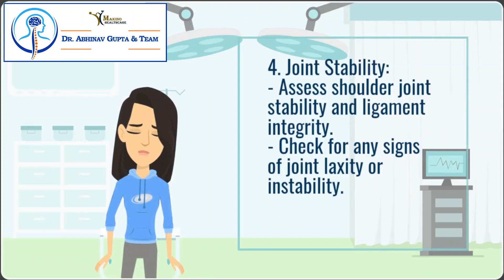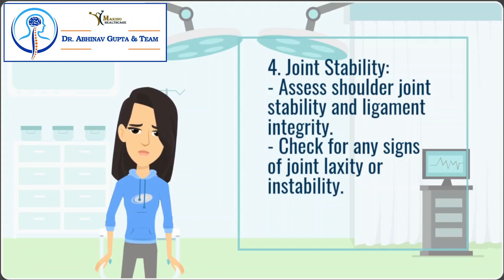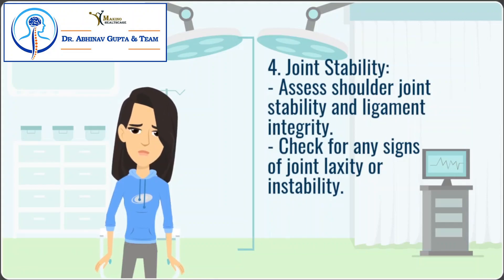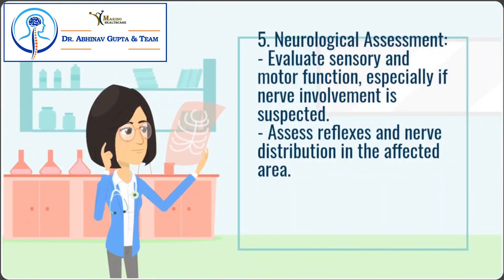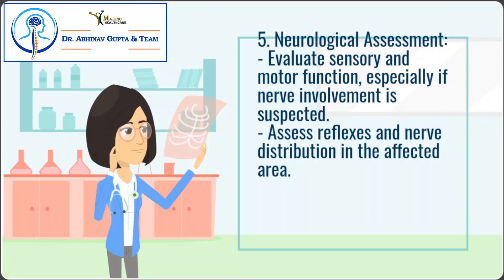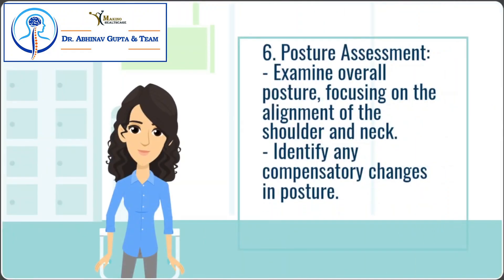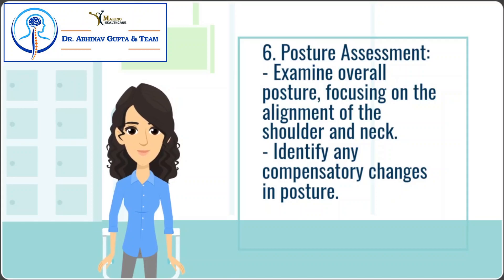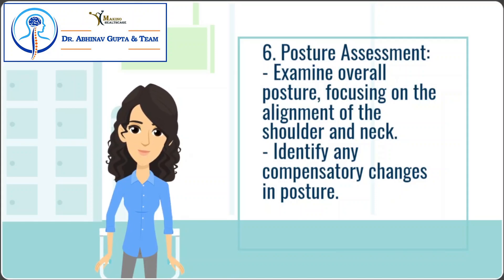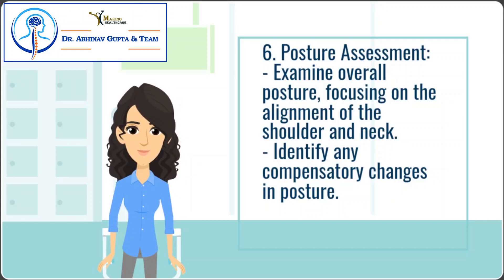Joint stability: assess shoulder joint stability and ligament integrity, and check for any signs of joint laxity or instability. Neurological assessment: evaluate sensory and motor function, especially if nerve involvement is suspected, and assess reflexes and nerve distribution in the affected area. Posture assessment: examine overall posture, focusing on the alignment of the shoulder and neck, and identify any compensatory changes in posture.